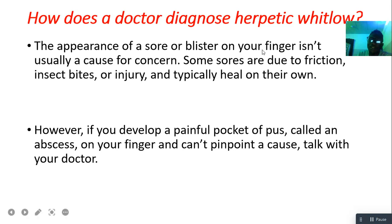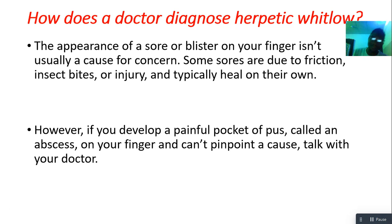How does a doctor diagnose herpetic whitlow? The appearance of a sore or blister on your finger isn't usually a cause for concern — some are due to friction, insect bites, or injury and heal on their own. However, if you develop a painful pocket of pus called an abscess on your finger and can't pinpoint a cause, talk with a doctor. Noticing an accumulation of pus — an abscess — on your finger is a pointer that you may have started developing whitlow.